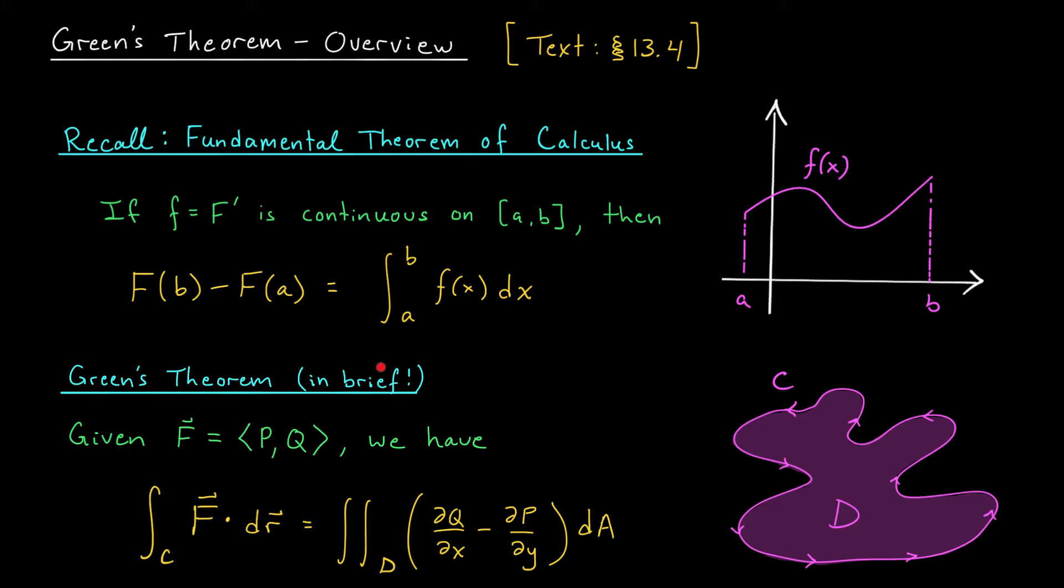But for now, here's the result in brief. It says that if you're dealing with a vector field capital F with component functions p and q, then you can compute the line integral of F along some crazy closed curve C, might look something like this, by instead computing the double integral of some sort of a derivative of F throughout the interior of the region. So again, we have a connection between the values of a function along the boundary and the values of some sort of a derivative of that function throughout the interior, just like the FTC.